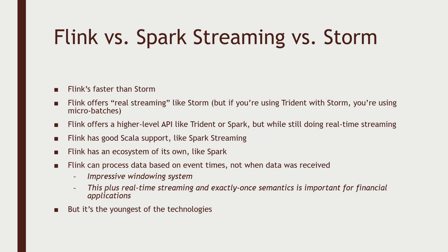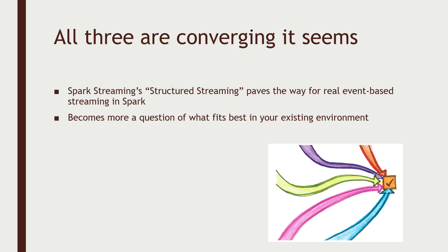Flink is the youngest of these technologies. It's matured quite a bit and is at a point where you should consider it as a viable option to Spark Streaming and Storm. It's moving quickly, but it is still the youngest and still finding its footing. However, all three solutions do seem to be converging in terms of feature sets — Structured Streaming in Spark at least paves the way for real event-based streaming. At the end of the day, it's going to come down to what best fits into your existing environment: what connectors exist for your streaming solution, how it interacts with your data sources, and where you ultimately want to store the data.